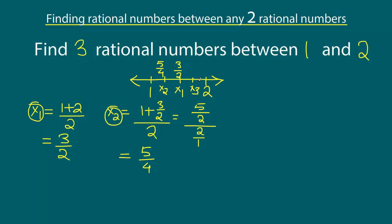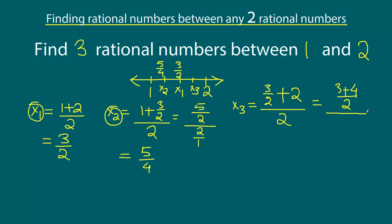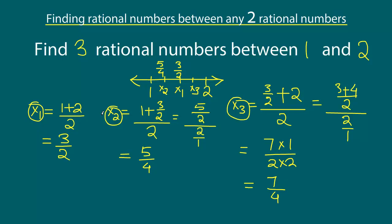The third rational number is the average of x1 and the number two. So x3 equals three over two plus two, the entire thing divided by two. At the top, the LCM is two, so we have three plus four, and the denominator is two over one. This gives us seven, so it will be seven times one over two times two, or seven over four. So we have found the three rational numbers: x1 is three over two, x2 is five over four, and x3 is seven over four. These three rational numbers exist between the number one and the number two.